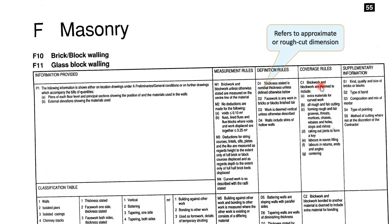For the coverage rules — brickwork and blockwork are deemed to include extra materials for caved work or rough and fair cutting, raking out the joints to form a key, labors in eaves filling, labors in return ending, angles, and also centering. So all those work activities have to be taken into account whenever you are pricing the brickwork. You don't separately charge the labor for eaves filling, labor for returns and angles, or for forming rough and fair cuts, grooves, or chases. To avoid defeating the purpose, you need to take into account that you will perform all these activities whenever you are estimating the brickwork.